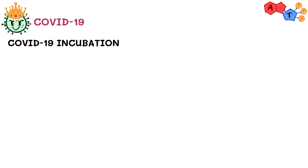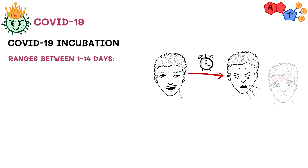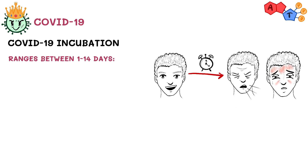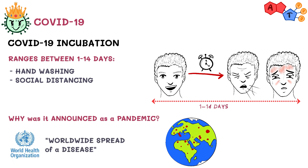The incubation period for COVID-19 ranges between 1 to 14 days, meaning from the time of exposure to SARS-CoV-2 until you show symptoms it can last up to 14 days. This highlights the importance of continuous hand washing and social distancing, as you don't want to unknowingly contract COVID-19 from someone in their incubation period. COVID-19 was announced as a pandemic because, according to the WHO, a pandemic is a worldwide spread of a new disease that most people don't have immunity against yet.